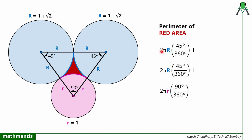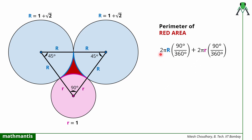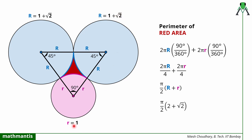These two arc length values are the same, so adding them: 45 + 45 becomes 90. This gives 2π × capital R × (90/360) + 2π × small r × (90/360). Each fraction equals 1/4, so we can take out the common factor 2π/4, which is π/2. Inside, it will be capital R plus small r, which equals (1 + root 2) + 1 = 2 + root 2. So the perimeter of this red shaded region is π/2 × (2 + root 2).